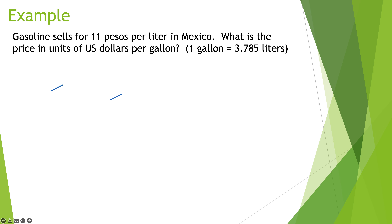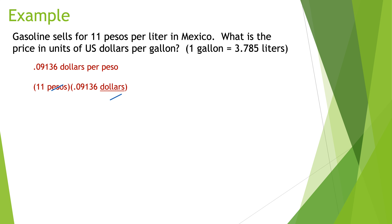First, there are 0.09136 dollars per peso. So let's see how many dollars per liter it is. There are 11 pesos, and it's 0.09136 dollars per peso. I line the pesos up so that I can cancel them — one on top and one on the bottom. That leaves me with dollars, so the price is $1.005 per liter.